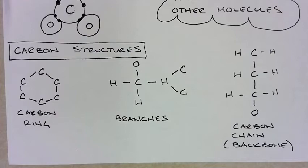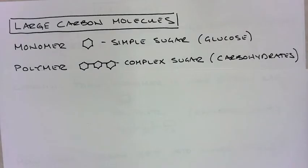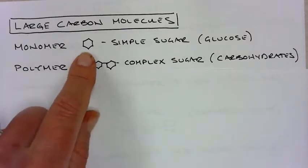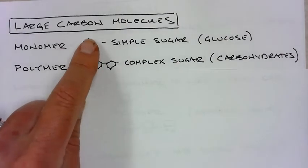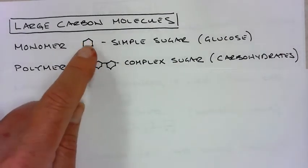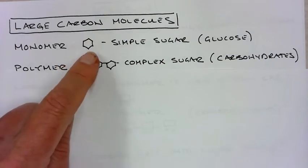Two other terms that we need to know when we're talking about chemical molecules are something called a monomer. In this case, it is a carbon ring. You'll notice that it doesn't have a C in it - only carbon appears in these rings. Whenever you see this, it means that there's a carbon molecule on each of these little corners here.